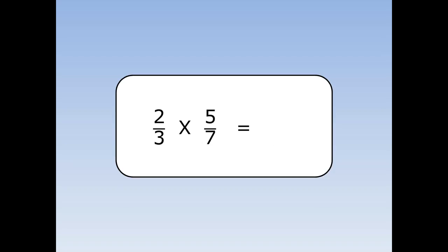2 thirds times 5 sevenths. We times the top by the top: 2 times 5 is 10. The bottom by the bottom: 3 times 7 is 21. The answer is 10 over 21.